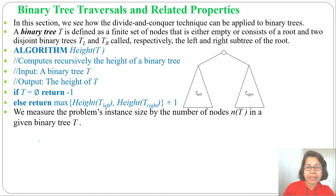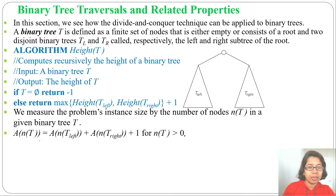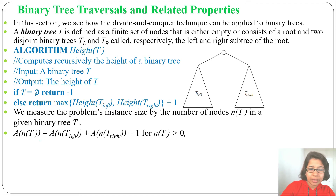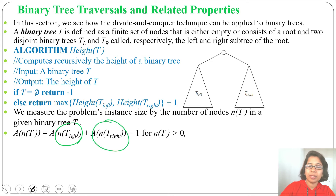We measure a problem's instance size by the number of nodes. From the number of nodes we can gauge how big or small the binary tree is. We can say: number of nodes of T equals number of nodes of T-left plus number of nodes of T-right plus 1. So the total number of nodes is the left subtree nodes plus the right subtree nodes plus 1.